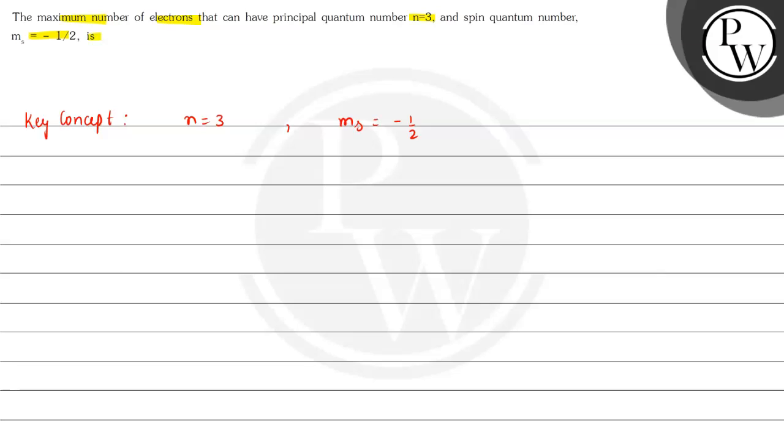As we know for a given value of principal quantum number, maximum number of electrons, what is the formula for them? So, here maximum number of electrons is equal to 2n squared electrons, or we can find it out by other method also which is that